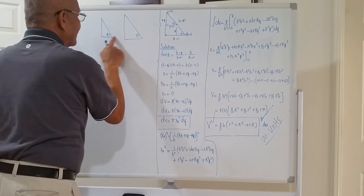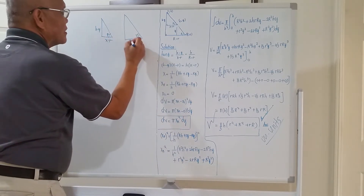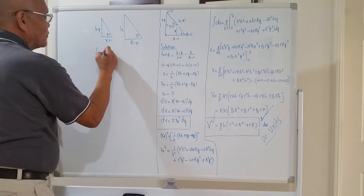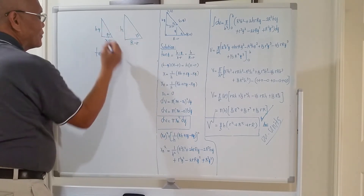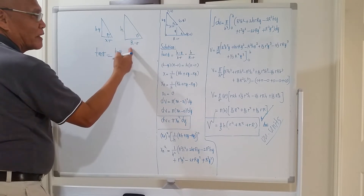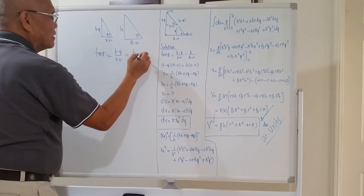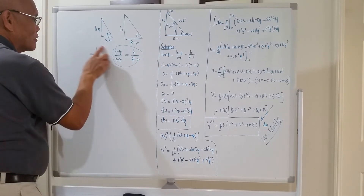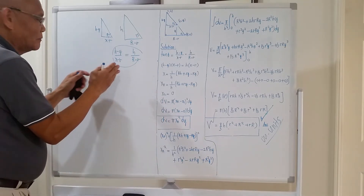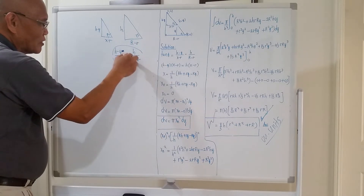Both triangles share angle theta. The height of the smaller triangle is (h - y), the base is (x - r); the base of the bigger triangle is (R - r), and the height is h. We take the tangent of theta: using the first right triangle, tan θ = (h - y) / (x - r); using the bigger right triangle, tan θ = h / (R - r). Then after equating the two ratios: (h - y) / (x - r) = h / (R - r). Cross multiply — it's just pure algebra.